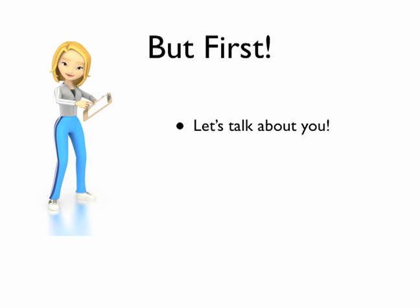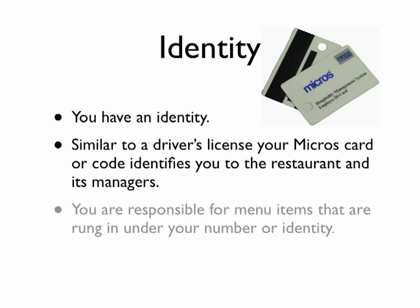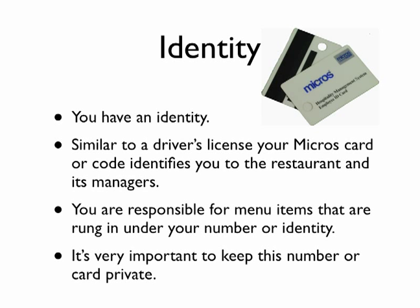First, let's talk about you — and what I mean by this is you have an identity within the system. Similar to a driver's license, your Micros card, or if you're using a four-digit code, identifies you to the restaurant and its managers. It identifies you to the back of the house as well as the bar, so they know where drinks are going and who ordered them. Because of this, you are responsible for menu items that are rung in under your number or identity, so it's very important to keep this number or this card on you at all times.